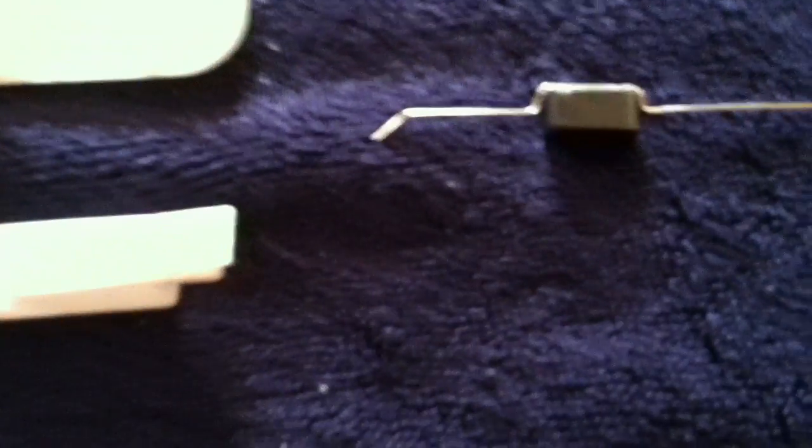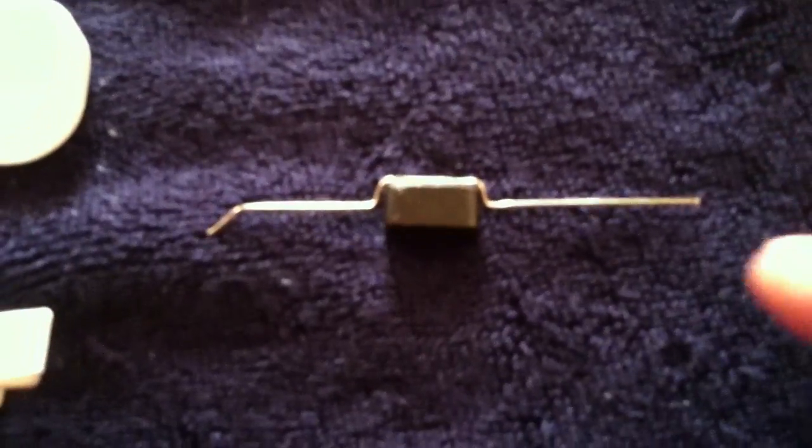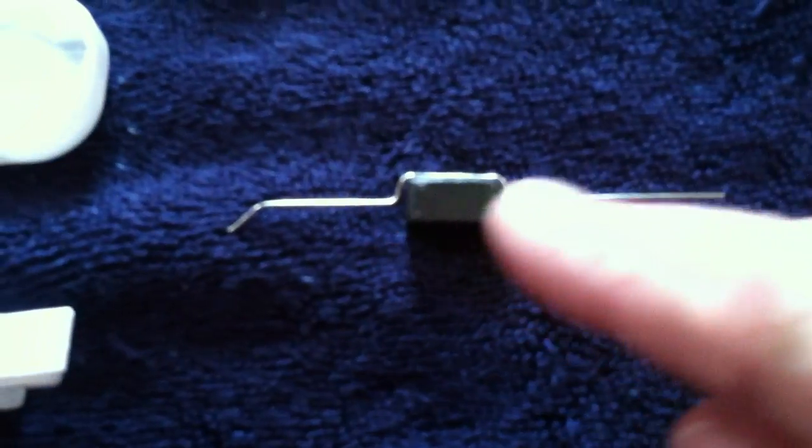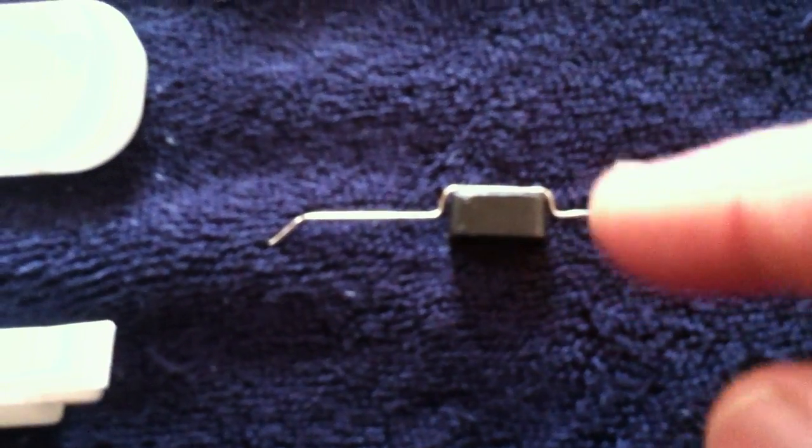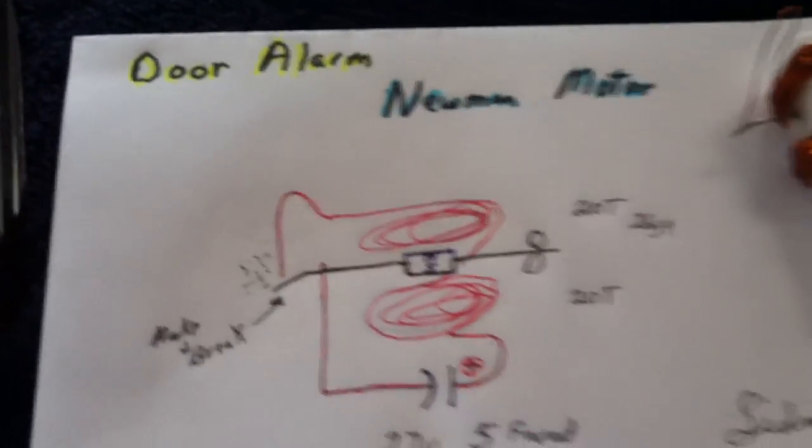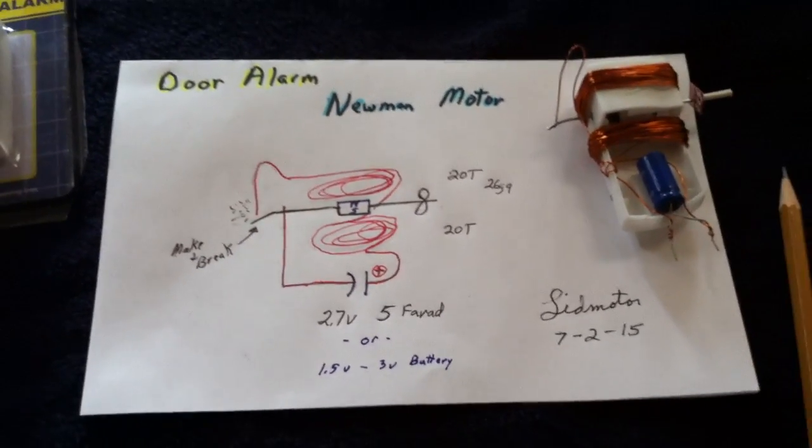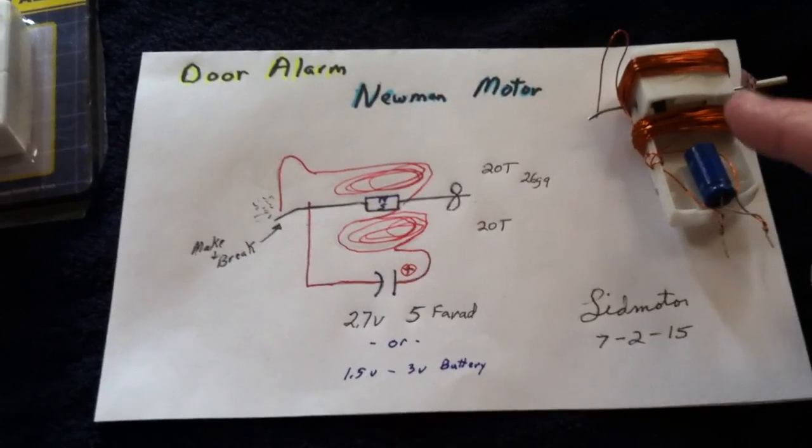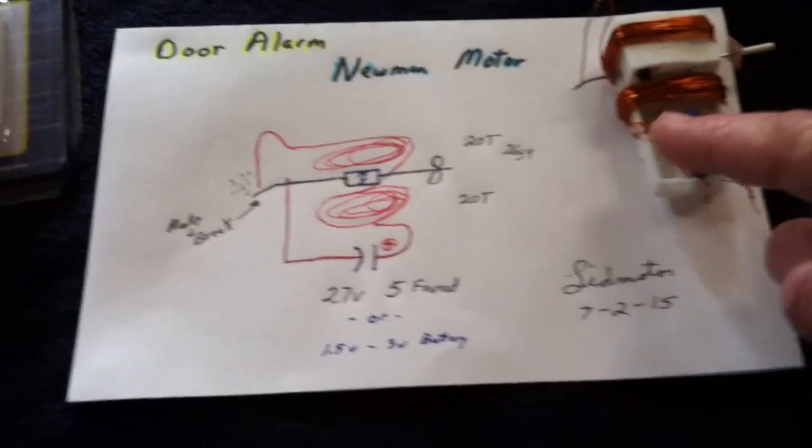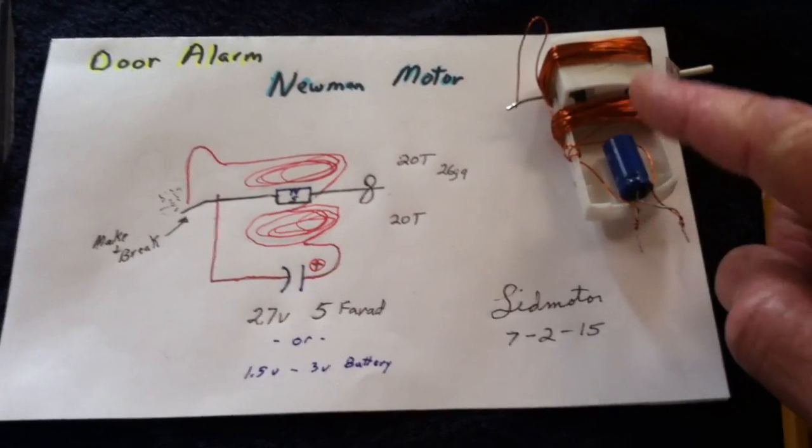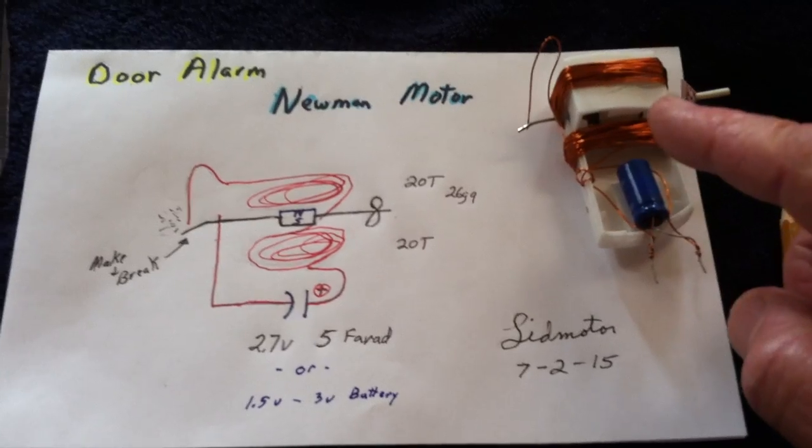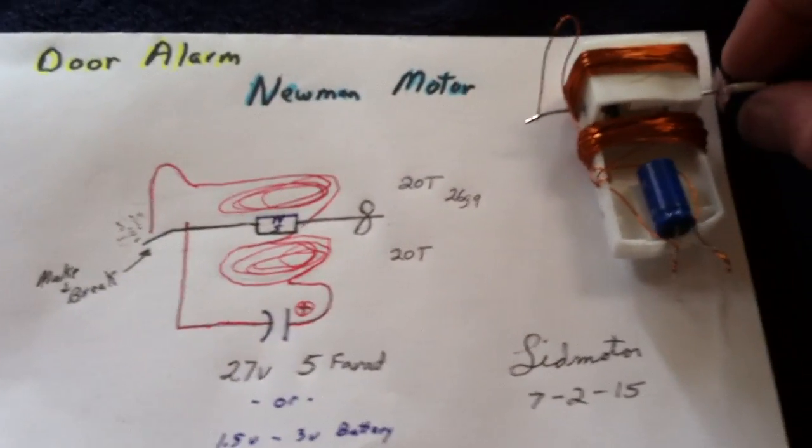And you can take those parts and get a paper clip and bend the paper clip around the magnet and then tie the magnet on and tape it up. You can make yourself a nifty little Newman motor. That's the leftover parts from that door alarm and it makes a nifty Newman motor.